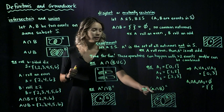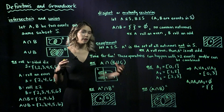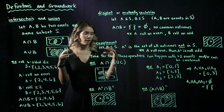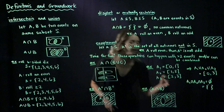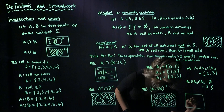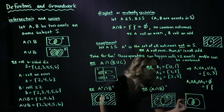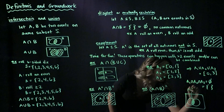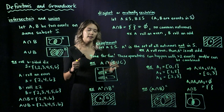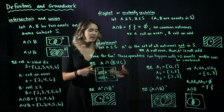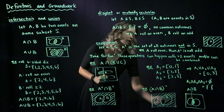One more example: the complement of A intersect B. It helps to think from inside to outside. First, A intersect B is everything they have in common. Then taking the complement — everything in S that is not in A intersect B — gives us the shaded area outside the overlap region.